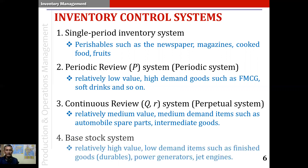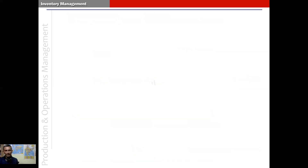And finally, we have the base stock system. The base stock system is used for relatively high value, low demand items, such as finished goods, durables, power generators, jet engines, and so on. So these are four popular types of inventory control systems. Thank you.